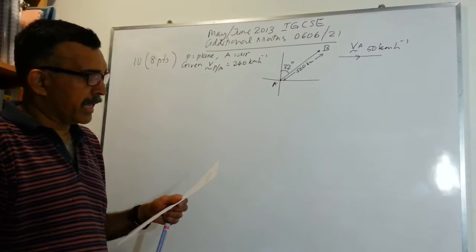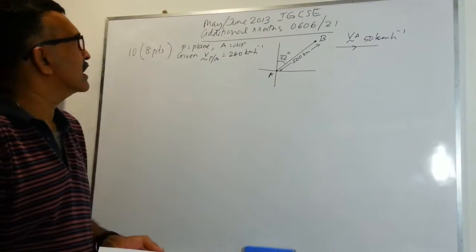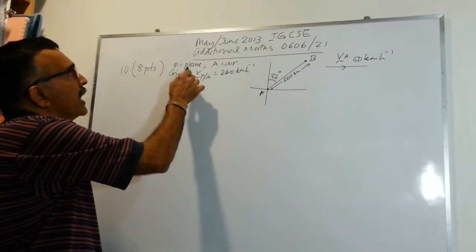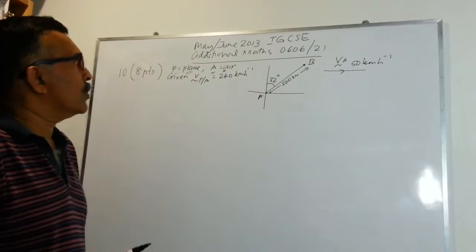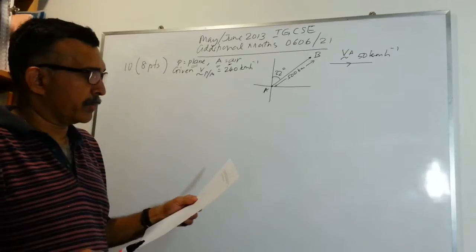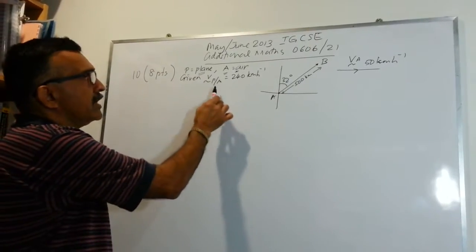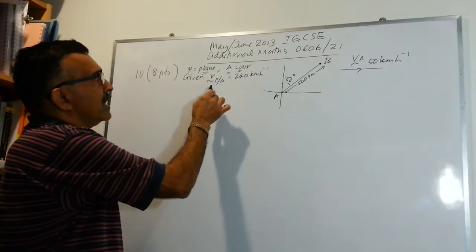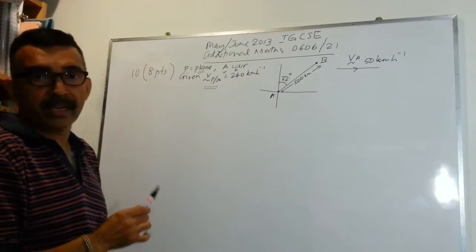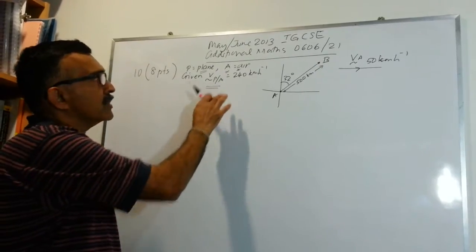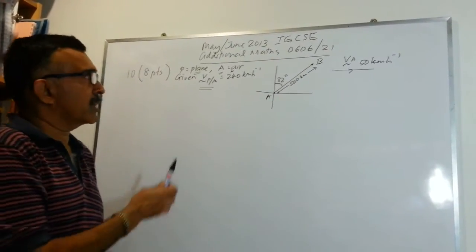We are told a plane whose speed in still air is 240 km per hour. I am using P for plane and A for air. So in vector notation, the velocity of P relative to A has a magnitude of 240 km per hour. That's why we refer to this as the speed.